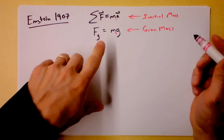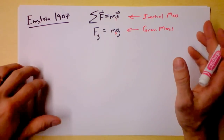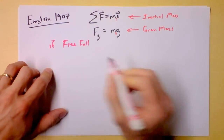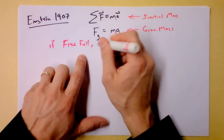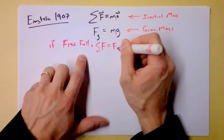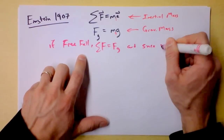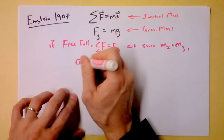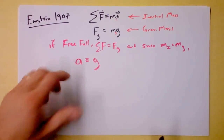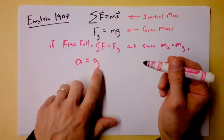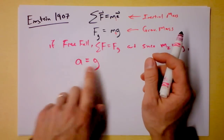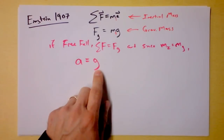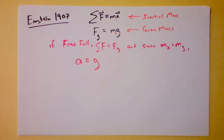This tests an aspect of the equivalence principle. If these two masses are the same, we get the conclusion that if something is in free fall — the only force acting on it is gravity — then the net force is the force of gravity. Since inertial mass equals gravitational mass, the acceleration of something in free fall is g, the strength of the gravitational field, which also has units of acceleration. A lot of people call this the acceleration of gravity, or free fall acceleration.